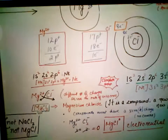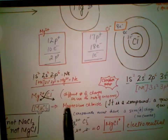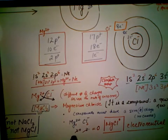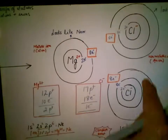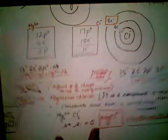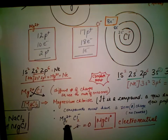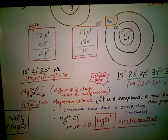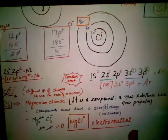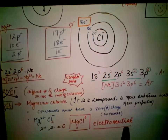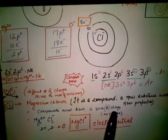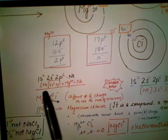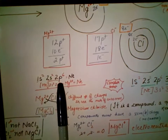For magnesium chloride: two electrons are lost by magnesium, and one electron is gained by each chlorine. For one magnesium atom we need two chlorine atoms — that's why the formula is MgCl2. This shows electroneutrality, because compounds must always have a zero net charge. In the final answer, there are no plus or minus signs on the compound.